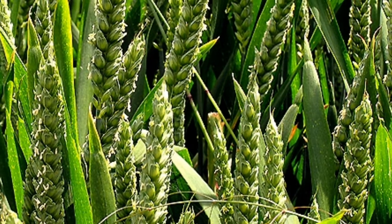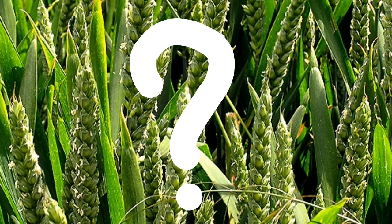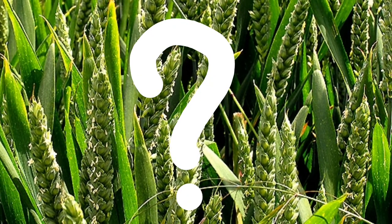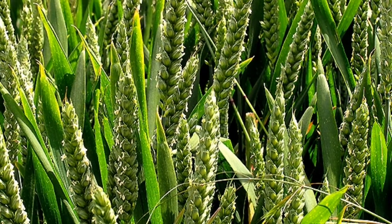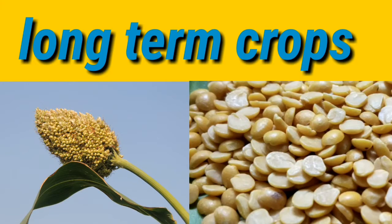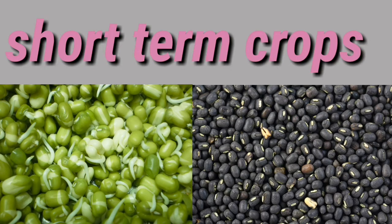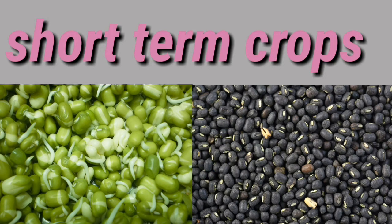Do you know how many days are required for growing these crops, or which crops need more duration? The growth period for all crops is not the same. Each crop has its own particular time to grow. Some crops like jowar and red gram take a minimum of 180 days or more for harvesting — these are called long-term crops. Some crops like green gram and black gram take 100 days for harvesting — these are called short-term crops.